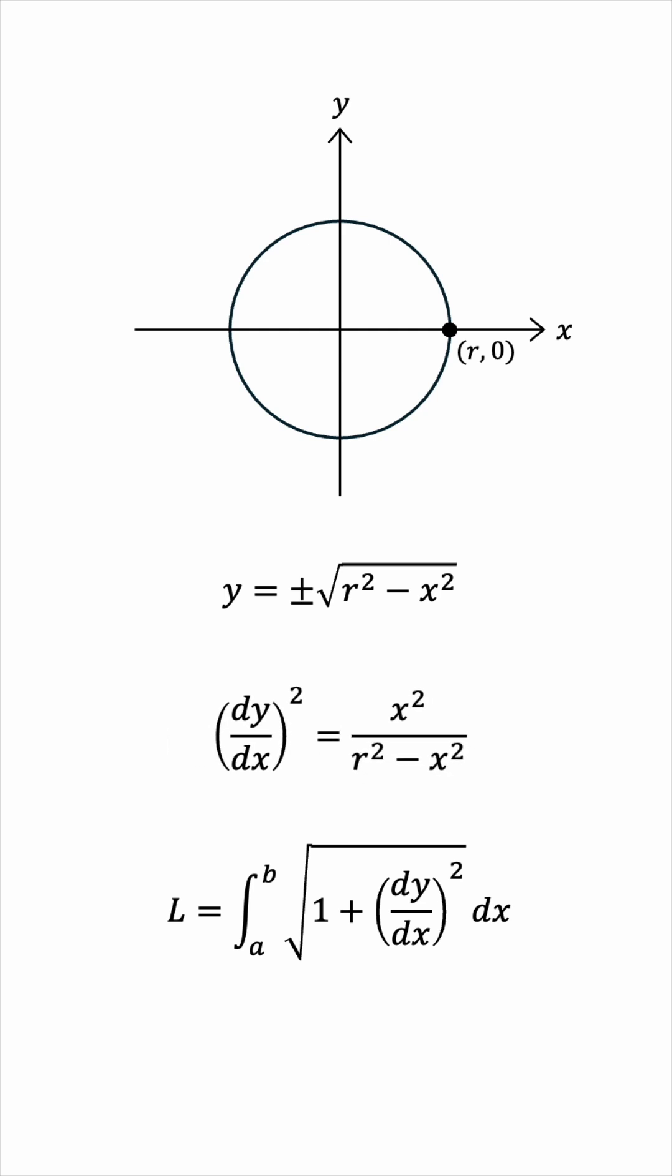Now, let's add 1 to both sides, make a common denominator, and then add the fractions. This simplifies into r squared over r squared minus x squared.